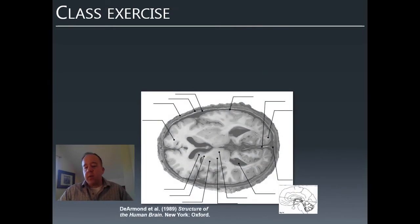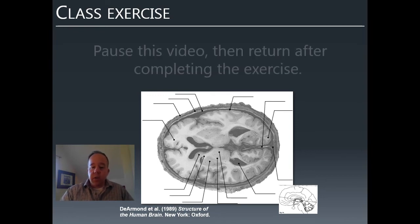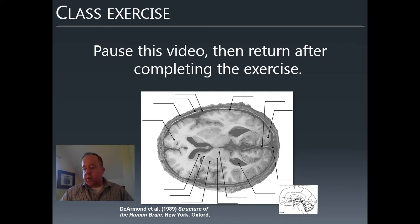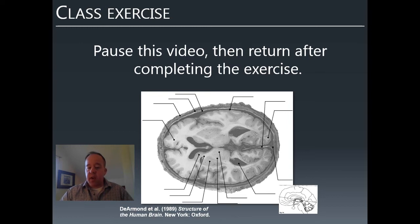And with that, we're going to do a class exercise. You'll pause the video, go do the exercise, then come back and continue. This will help you familiarize yourself with neuroanatomy. It's a horizontal slice of the brain—anterior is to the left, posterior is to the right, the right side of the brain is at the top of the diagram, and the left side is at the bottom.